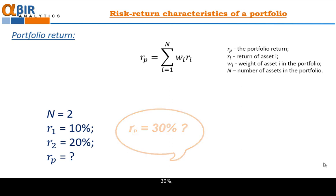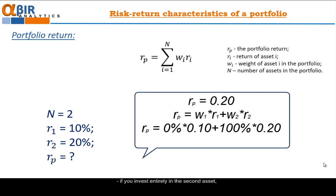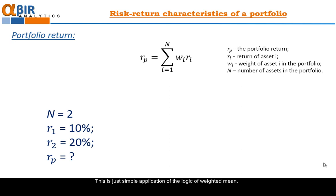What do you think? 30%? 10%? 20%? Or what? The right answer is 20%. If you invest entirely in the second asset which means that your weight in it is 100% and 0% weight in asset 1, only in this case the return of portfolio will be 20%. Any other combination between 1 and 2 will result in portfolio return between 10 and 20. This is just simple application of the logic of weighted mean.